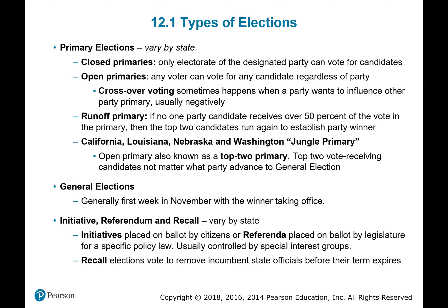A runoff primary can occur in either closed or open primaries. If no party candidate receives 50% of the vote in the primary, then the top two candidates run again to establish the party winner. California, Louisiana, Nebraska, and Washington have this jungle primary — a top-two primary to advance the top two candidates to the general election. It's a newer system, and perhaps more states will change to this.